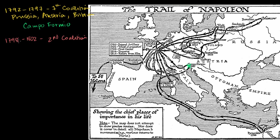Napoleon took power at the end of 1799, so this war spanned some of the Directory being in control and some of Napoleon as First Consul being in control. The players once again were Austria and Great Britain — they tend to be always at war with France during this period, especially Great Britain — and instead of Prussia, you have Russia.